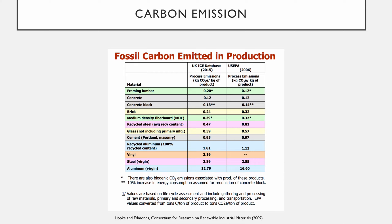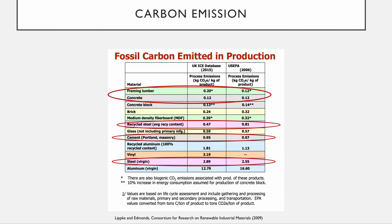In the first video of the class, we saw carbon emitted in the production of materials. Concrete and framing lumber are fairly close in carbon per kilogram, but we have to compare actual weights — concrete is about five times heavier than framing lumber per cubic foot. Cement production is almost a one-to-one ratio of CO2 per kilogram of material, and steel is also quite high — incredibly high for virgin steel.